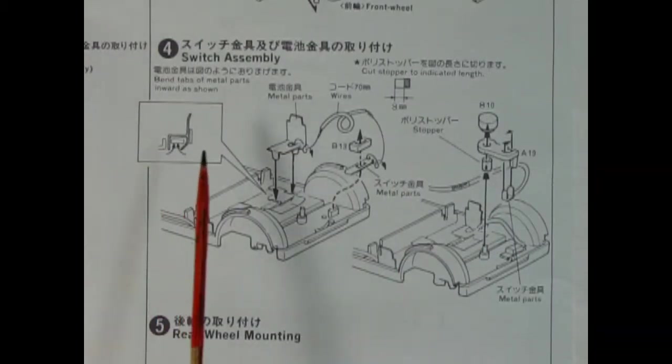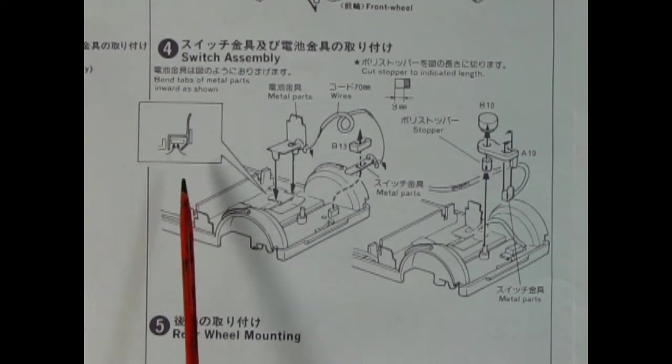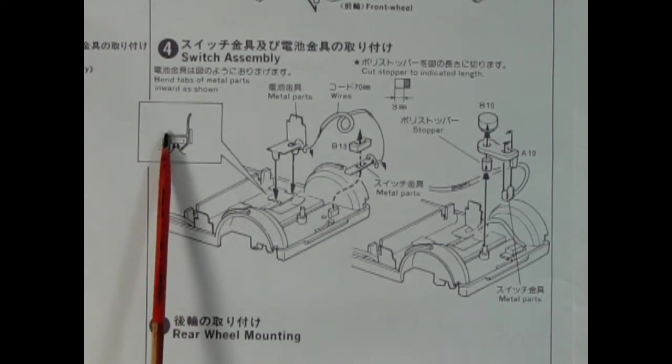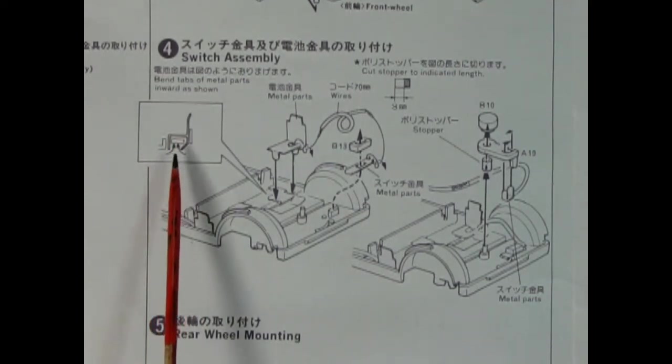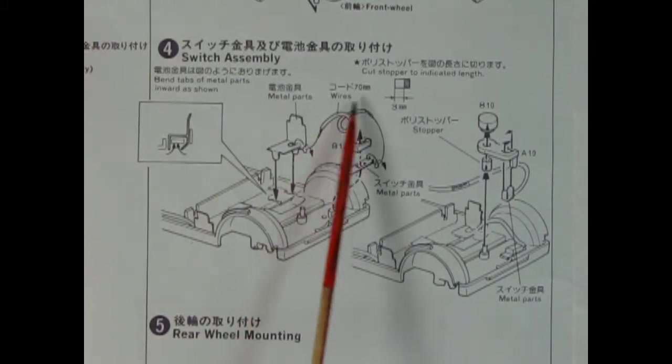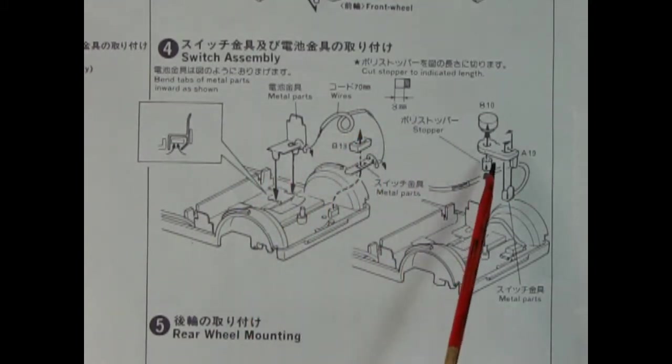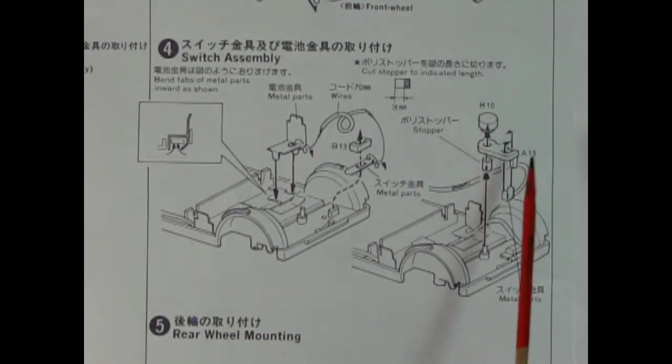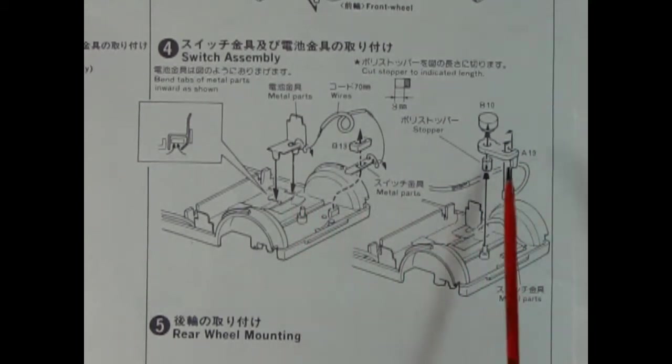Step four shows our switch assembly for the motorized model. Here we have our metal contact points being bent into the plastic, the wires we need, the little switch pedal, and even a stopper and some other components. Once this is all together, the switch will be able to move back and forth, thus turning on and off your car.